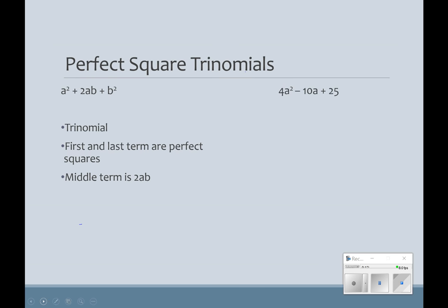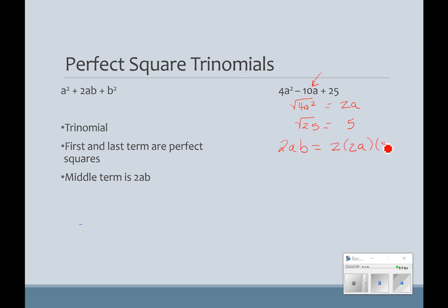Let's look at this next one. I have 4a squared, and the square root of that is 2a. Then I have 25 as my last term — the square root of that is 5. In order for this to be a perfect square trinomial, the middle has to be 2ab. So 2 times 2a times 5: 2 times 2 is 4, so 4a times 5 is 20a. This does not equal the middle term we have, so this is not a perfect square trinomial.